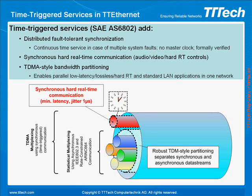Due to global synchronization with an accuracy of 1 microsecond, TT Ethernet allows synchronous or isochronous communication via IP network using time-triggered messages.